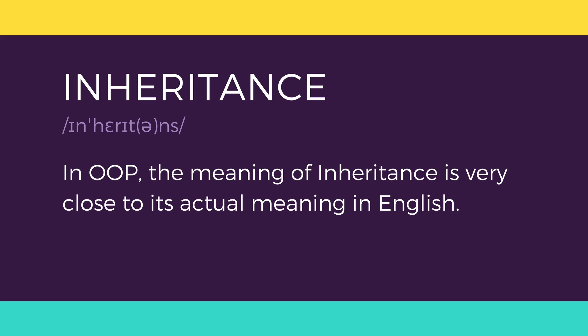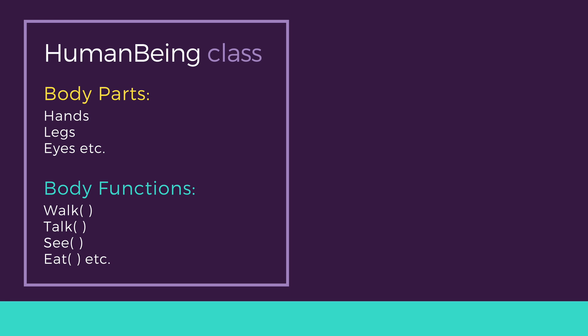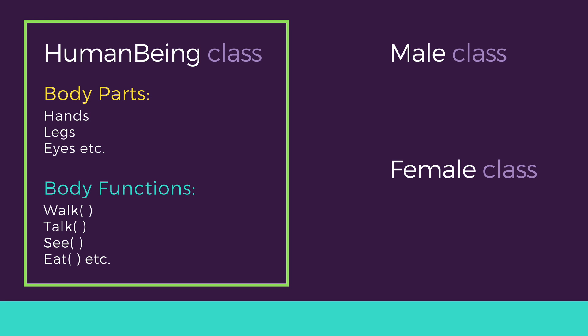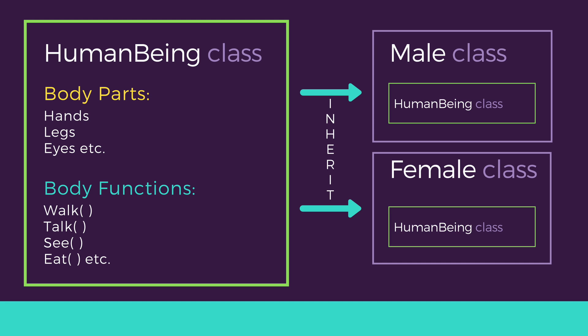Next is inheritance. Considering human being as a class which has properties like hands, legs, eyes, etc., and functions like walk, talk, eat, see, etc. — male and female are also classes, but most of the properties and functions are already included in the human being class. Hence they can inherit everything from the class human being using inheritance. We do not have to implement those common features again in the male and female classes; they simply inherit them.